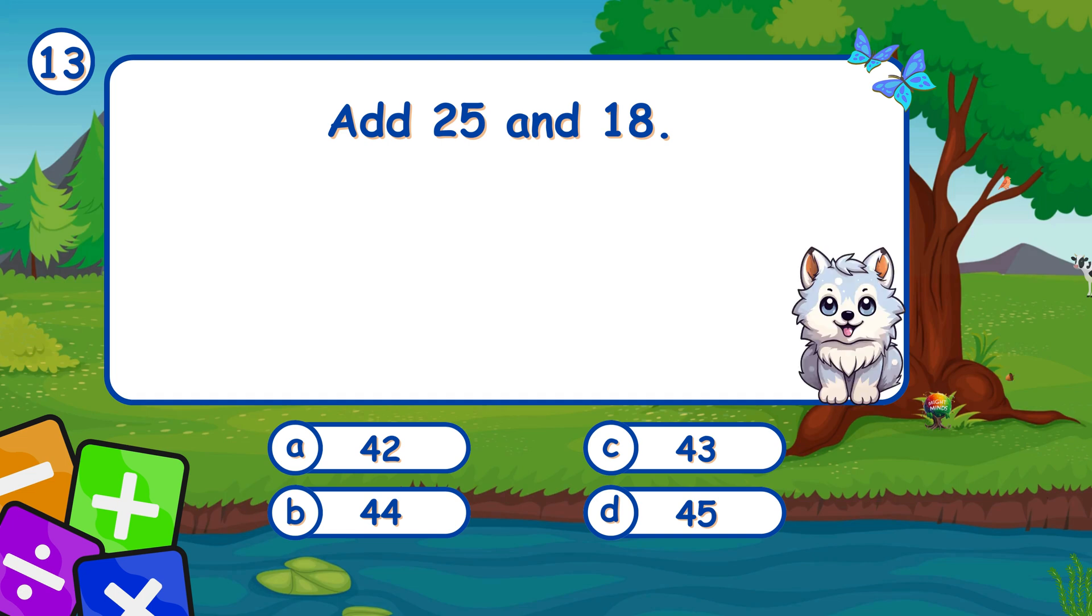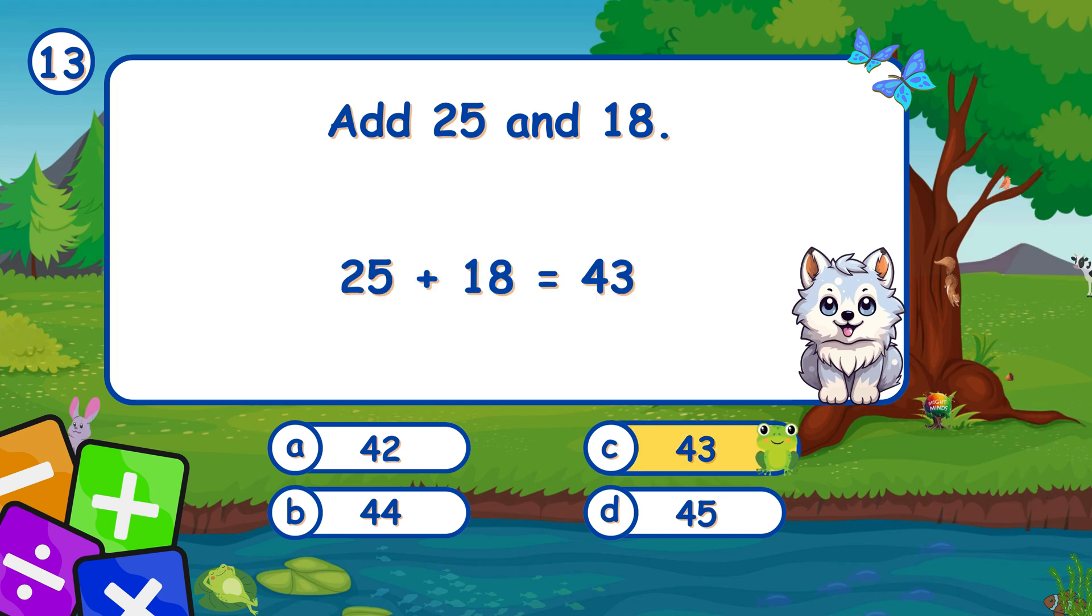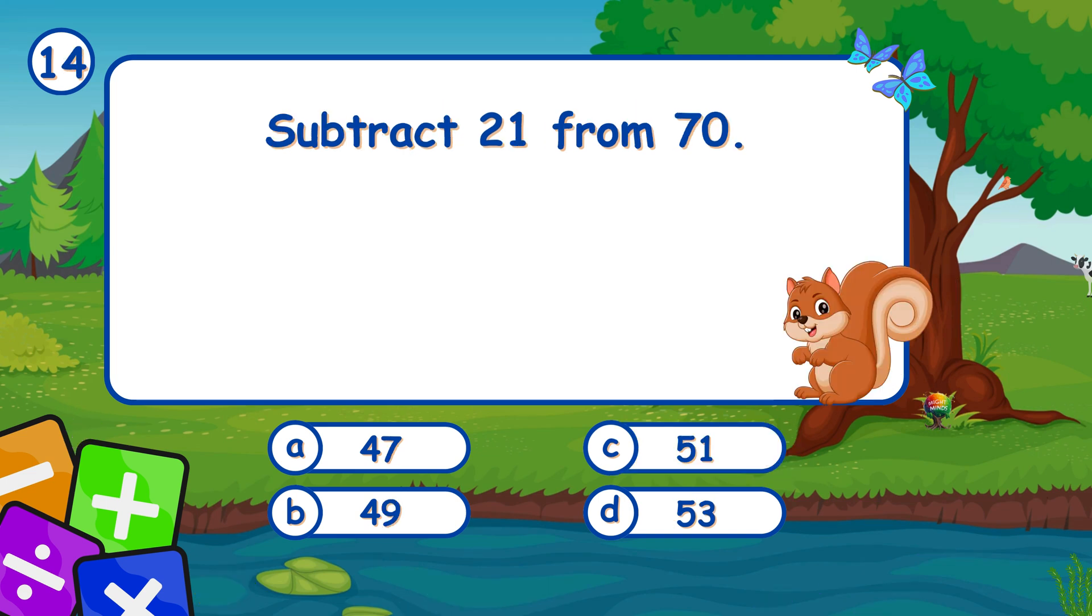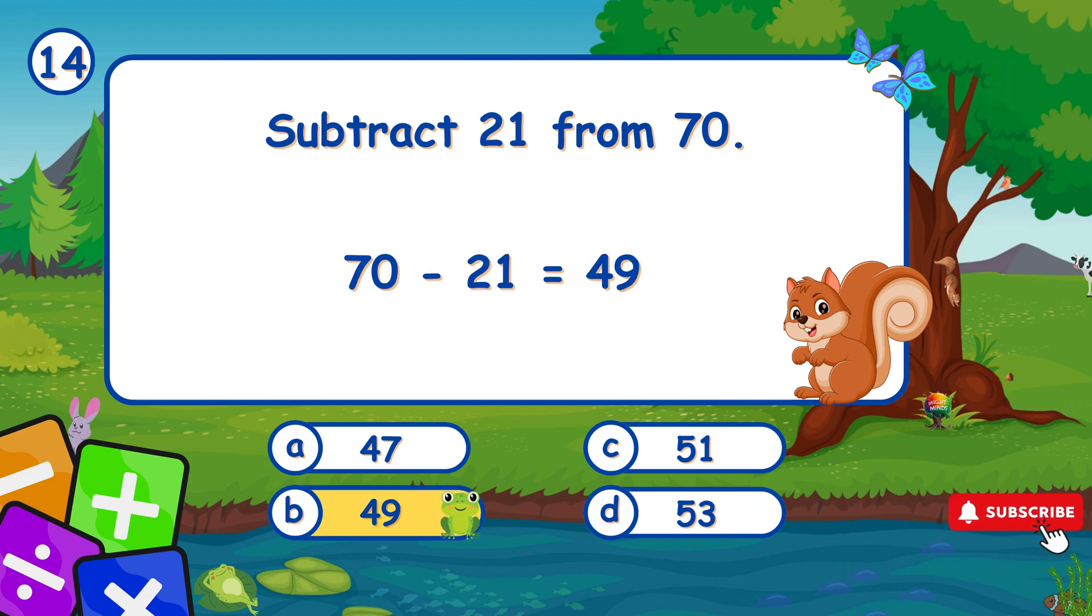Add 25 and 18. It's C, 43. Adding 25 and 18 gives 43. Subtract 21 from 70. It's B, 49. Subtracting 21 from 70 leaves 49.